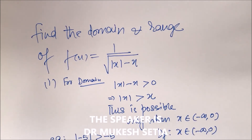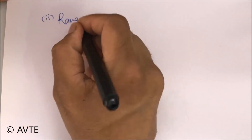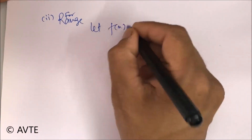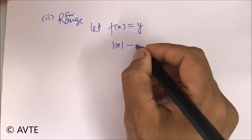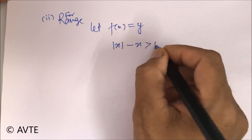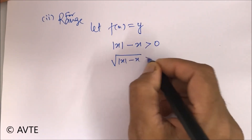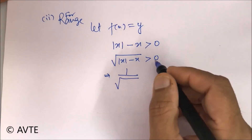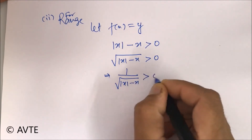Now coming on to the range. Finding the range is not a trouble. From the domain, we already know that mod x minus x is greater than or equal to 0, so the square root of that will also be greater than 0. And since this is greater than 0, its reciprocal will also be greater than 0.